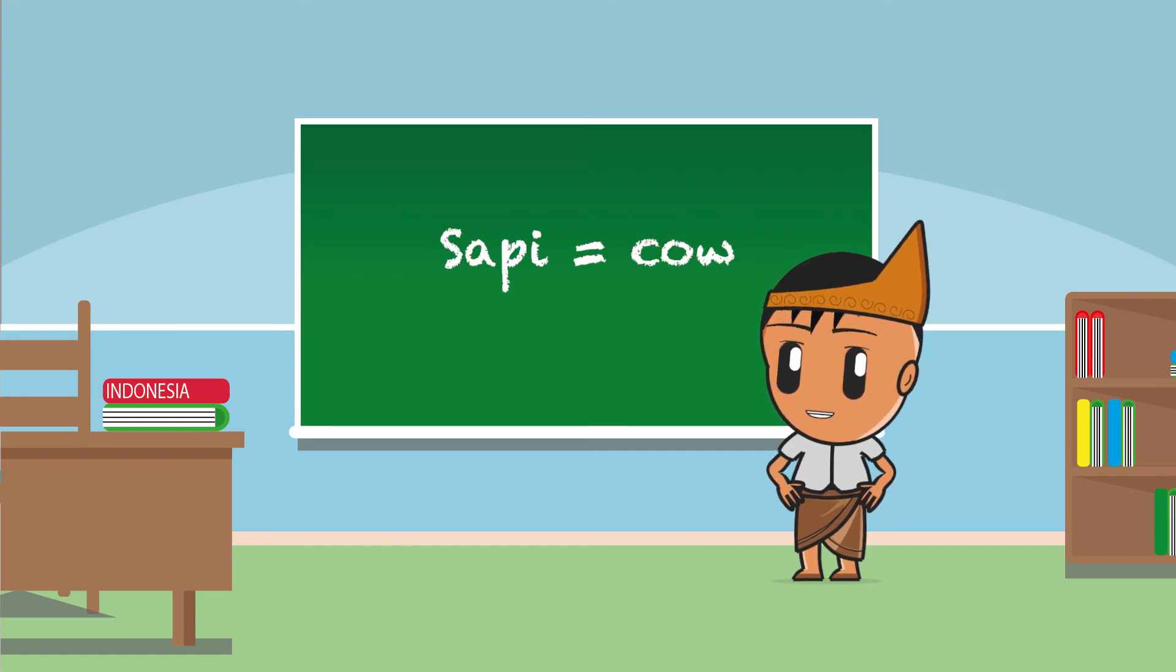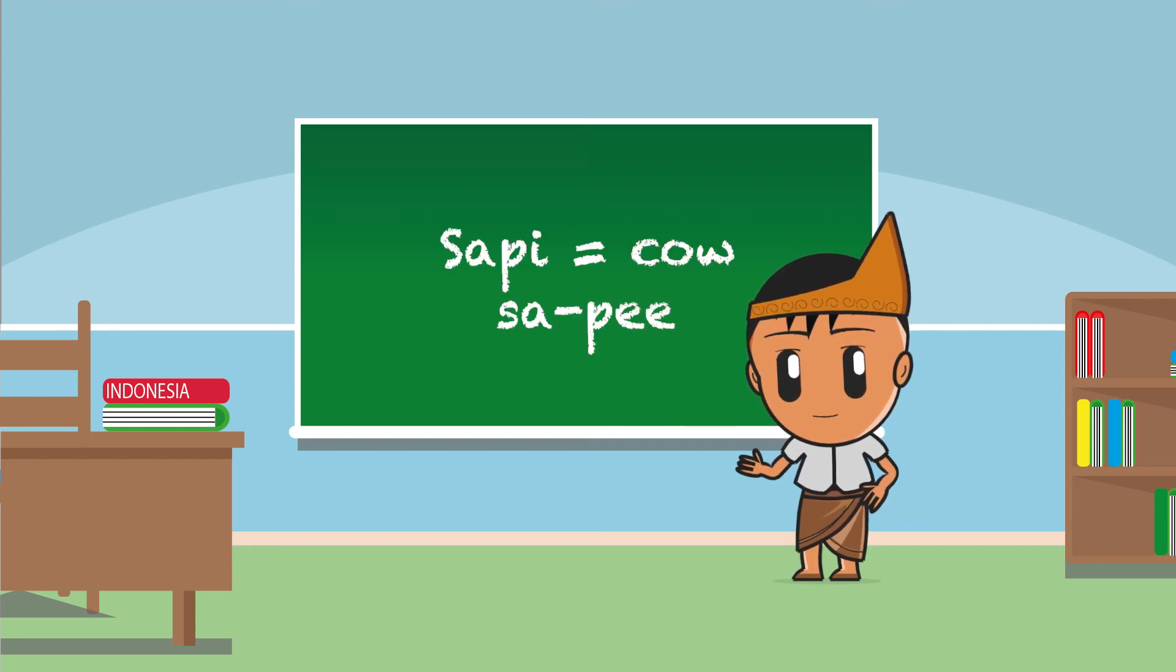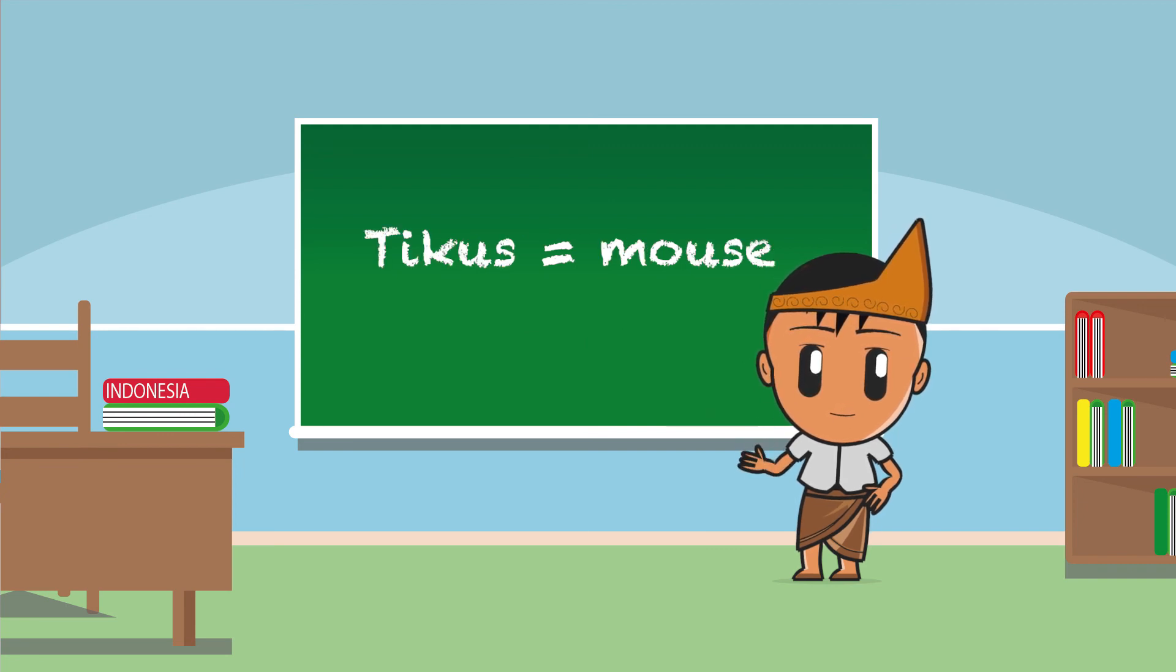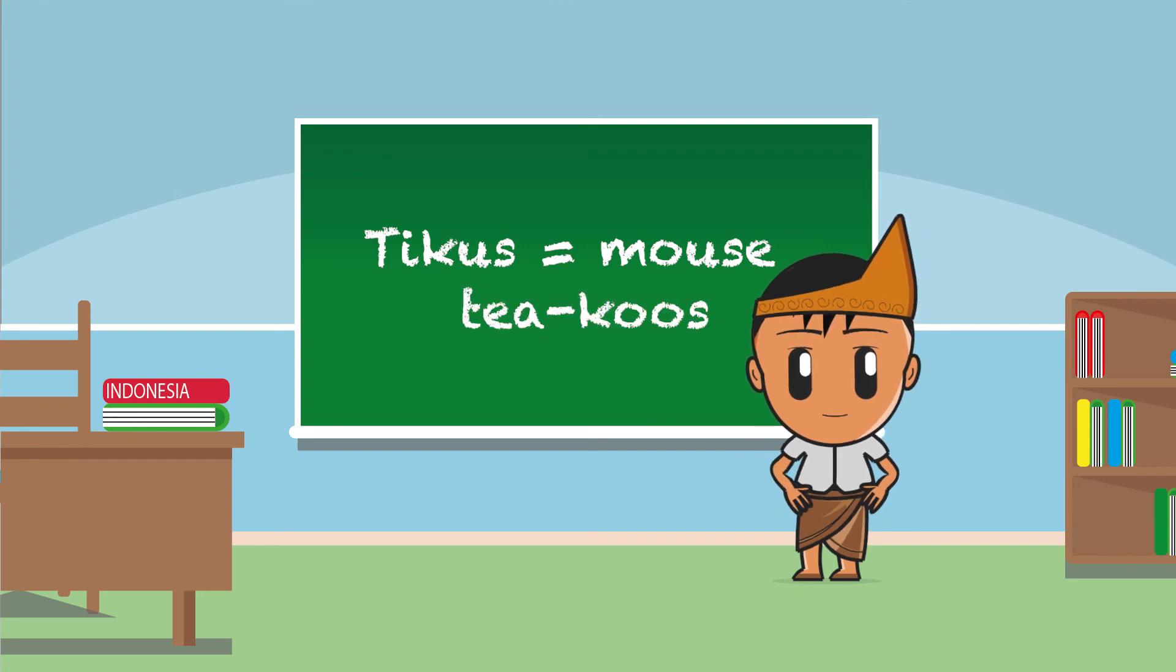Sapi means cow, sa-pi, sapi. Tikus means mouse, ti-kus, tikus.